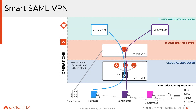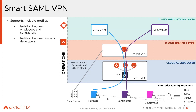The cool thing about this solution is that it is profile-based. You're not configuring users based on their source IP. You create a profile — you say these are my partners, this is my contractor. I want my partners, shown by the blue line here, to go only to the partner VPCs or VNets, and contractors go to their respective VPCs or VNets. We provide this isolation based on personas.